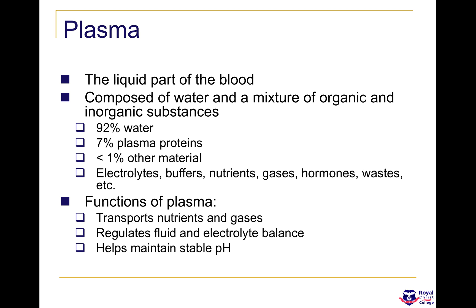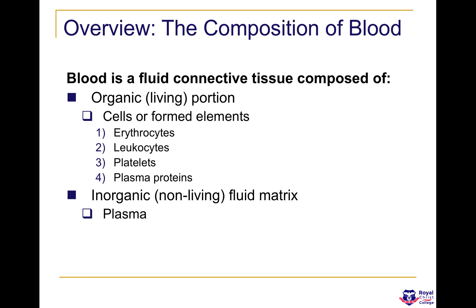Plasma is 92% water, 7% plasma proteins, and less than 1% other materials including electrolytes, buffers, nutrients, gases, hormones, and waste. The function of plasma is to transport nutrients and some gases, regulate fluid and electrolyte balance, and help maintain a stable pH. Plasma makes up about 55% of the blood volume.